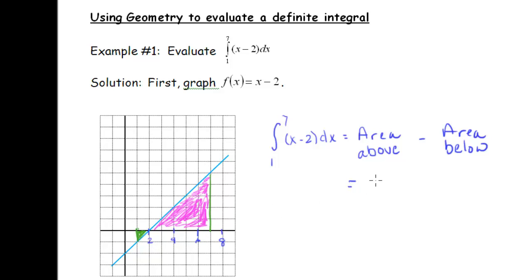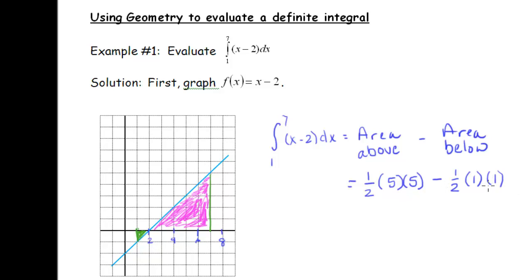The area above the x-axis is a triangle: one half times base times height. The base is 5 and the height is 5, giving one half times 5 times 5 = 25/2. The part below the x-axis must count as negative, so we subtract another triangle: one half times base 1 times height 1 = 1/2. You can think of the height as negative 1 with a plus sign, or positive 1 with a minus sign — either way it counts as negative.